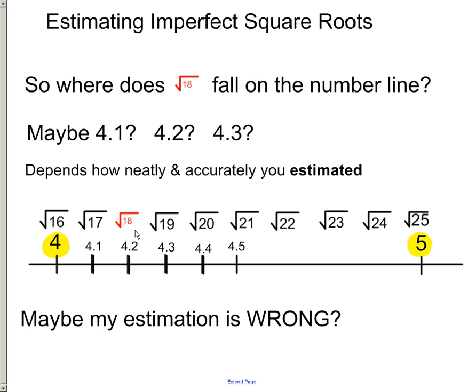Because remember, even though it's right over this 4.2 or a little bit before it, this is not accurate. It's an estimate. So, maybe my estimation was wrong. So, I'm saying maybe it is 4.1. Maybe the square root of 18 should be tucked over a little bit closer to here. Maybe it should be 4.3. I don't know. It's an estimate. So, how can we figure out what is the best estimate?